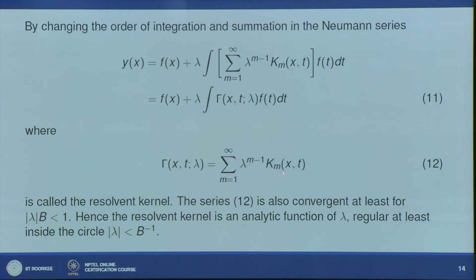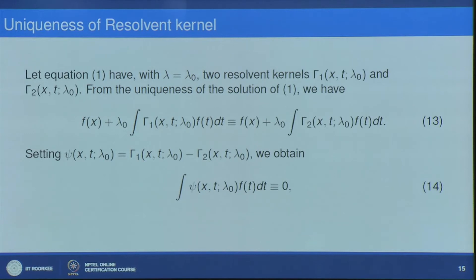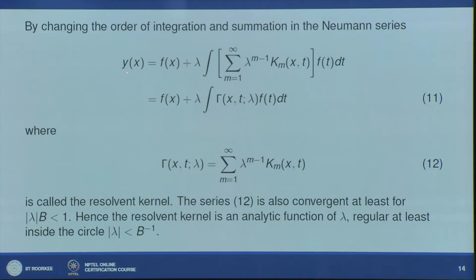We can prove that γ(x,t,λ) is given by this power series in λ and is an analytic function of λ. The convergence holds for |λb| < 1, so γ(x,t,λ) is an analytic function of λ whose radius of convergence is |λ| < b⁻¹, where b was defined earlier.